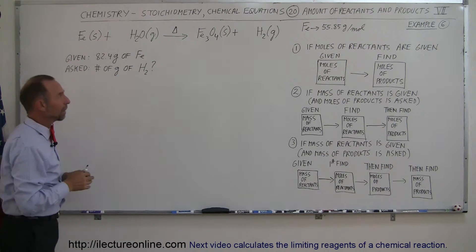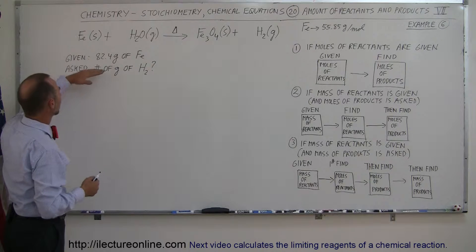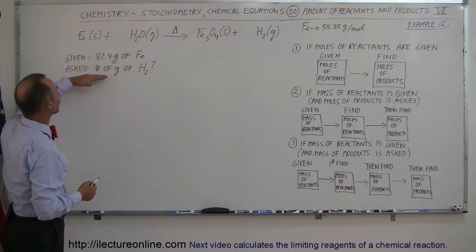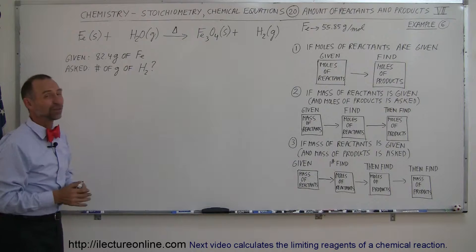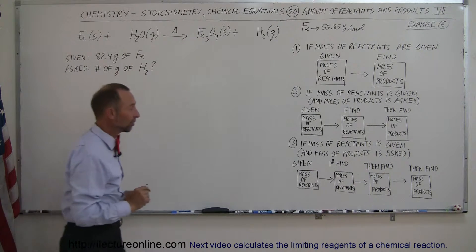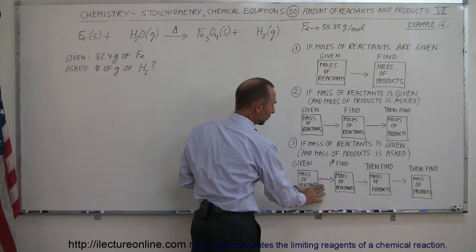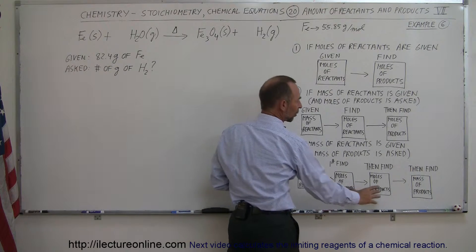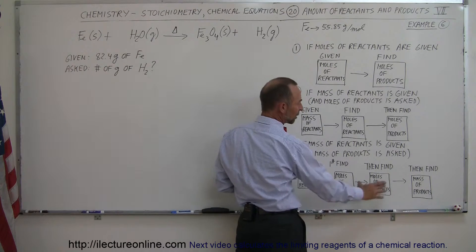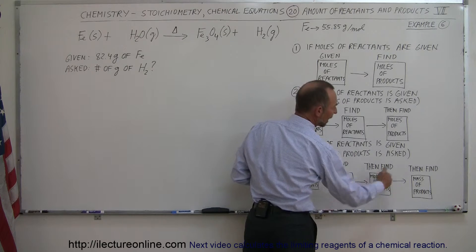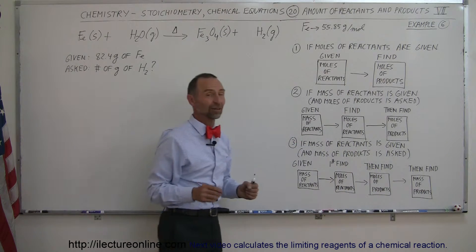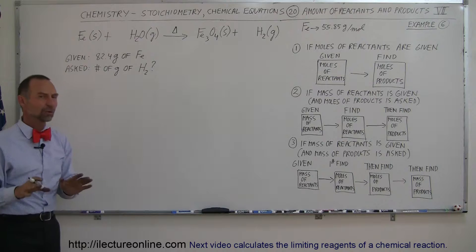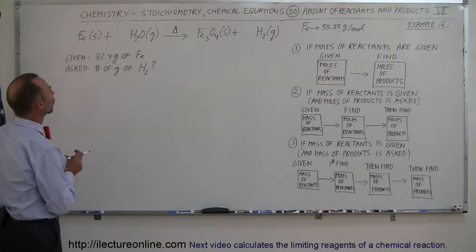The equation is not yet balanced. We have 82.4 grams of iron and we want to find the number of grams of hydrogen gas we end up with, so that's going to be a three-step process. We're given the mass of the reactant, we need to convert to the number of moles of the reactant, then convert to the number of moles of the product, then reconvert to the mass of the product. Before we can do that, we need to balance this equation.